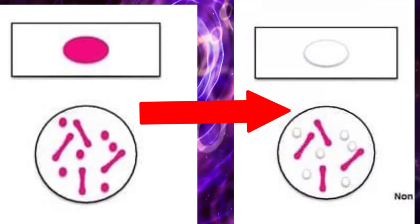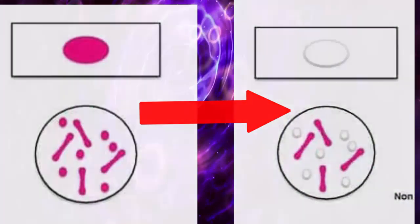decolorizing solution is applied. This removes the red dye from the background cells, tissue fibers, and any organisms in the smear except mycobacteria.